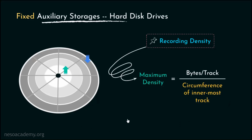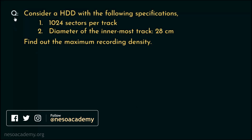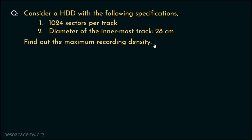Let's now solve a small numerical problem to understand this point more clearly. Consider a hard disk drive with the following specifications: 1024 sectors per track — that is, every track in the surface has 1024 sectors — and the diameter of the innermost track is 28 cm. We have to find out the maximum recording density based on the available information.